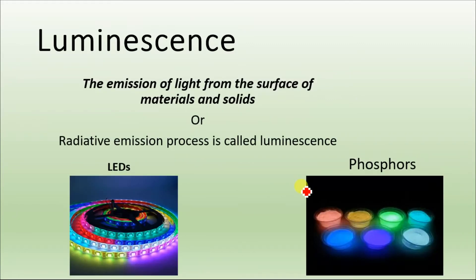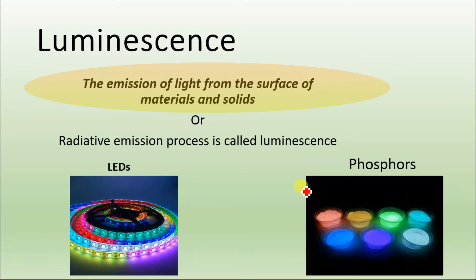Luminescence is the emission of light from the surface of materials and solids. In the absorption process, solids or materials absorb light, and the electrons from the valence band jump to the conduction band. Luminescence is essentially the reverse process of absorption.